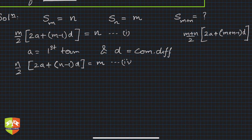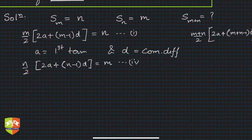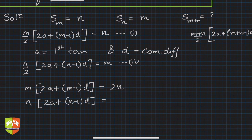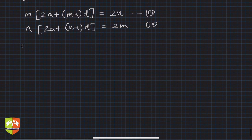So how do we go about it? Let's subtract these two equations and see what happens. Subtraction will kill a couple of variables. If you see, let's first simplify this by multiplying the two equations by 2. Hence we'll get m times 2a plus m minus 1 times d is equal to 2n. This is equation 3. And n times 2a plus n minus 1 times d is equal to 2m. This is equation 4.